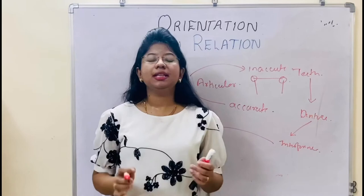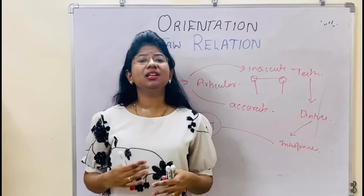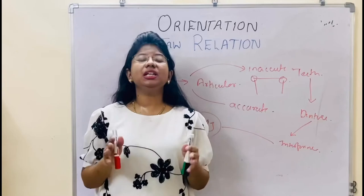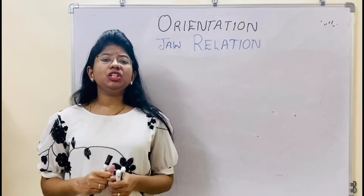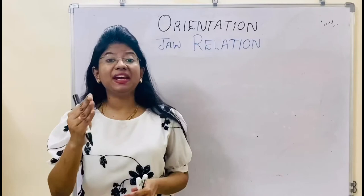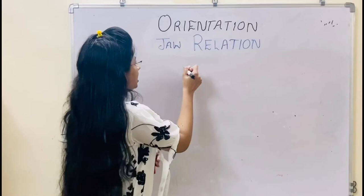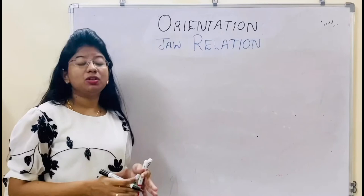That's why you need to record the correct relation. There are some points called anterior reference points as well as posterior reference points, which are very important for the orientation of the face bow. Various anterior reference points as well as posterior reference points are used for orientation. For example, the ala of the nose can be considered as an anterior reference point, while the tragus, which is present posteriorly, is the posterior reference point. Various articulators and face bows use those reference points for the purpose of orientation.